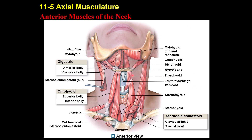These are the muscles of the anterior neck. The hyoid bone is not articulated with any other bone, but many different muscles are attached to it. An easy way to remember: muscles above the hyoid bone cause its elevation, and muscles below it cause depression of the hyoid bone. From deep to superficial, you have the geniohyoid, then the mylohyoid, then the digastric and stylohyoid muscles above the hyoid. You also have the styloglossus and stylohyoid muscles.